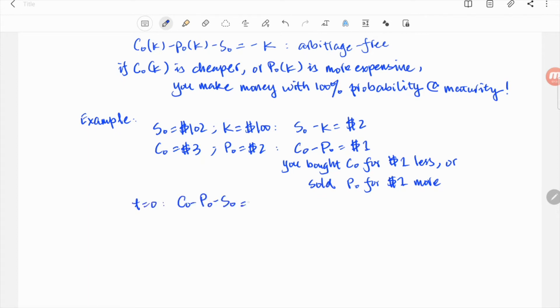To plug all the numbers into the portfolio value formula, at time 0, the portfolio is worth minus $101. Equivalently, you sold something for $101.